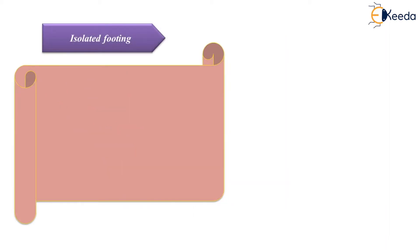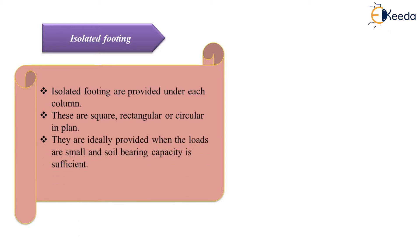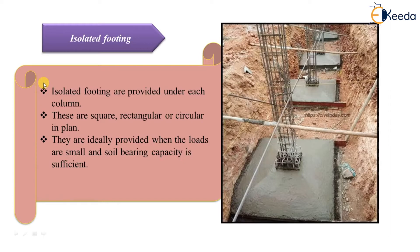The first type is isolated footing. Footings which are provided under single columns are called isolated footings. These are usually square, rectangular, and rarely circular in plan. Even for columns of circular, hexagonal, or octagonal shape, it is preferable to provide a rectangular or square foundation. Isolated footings are ideally provided when the loads are small and the soil bearing capacity is sufficient.